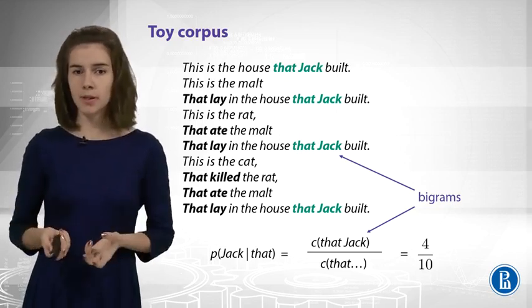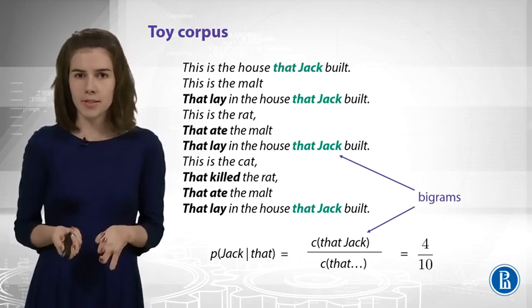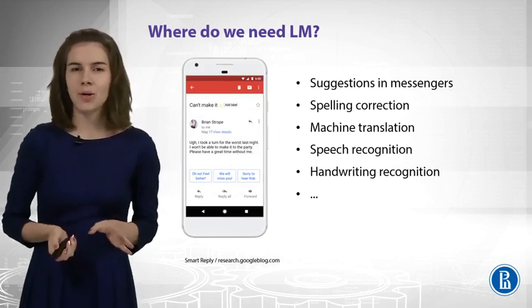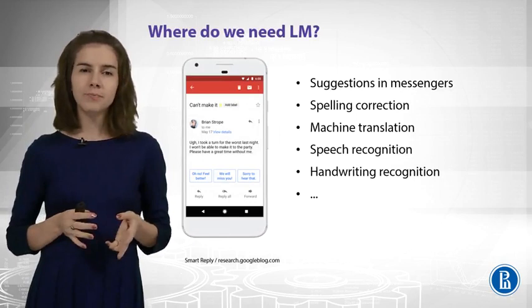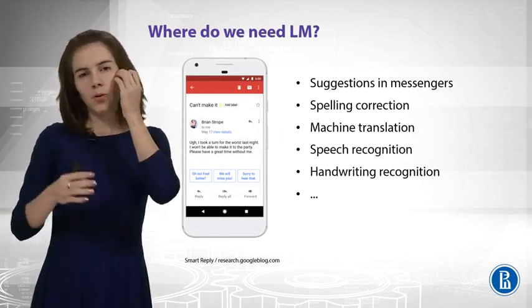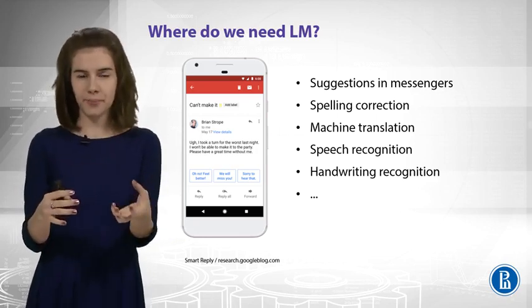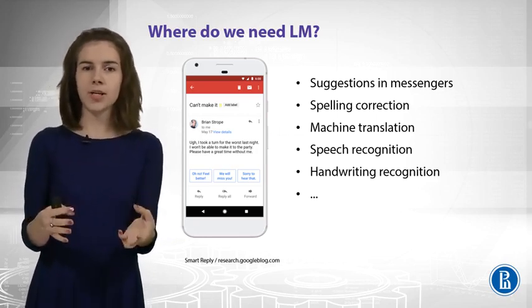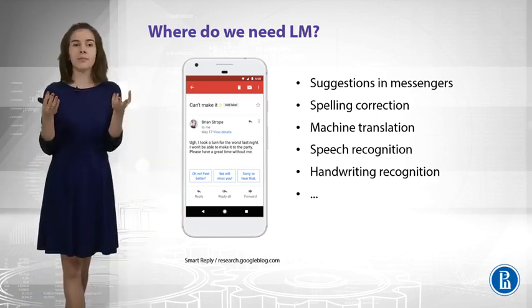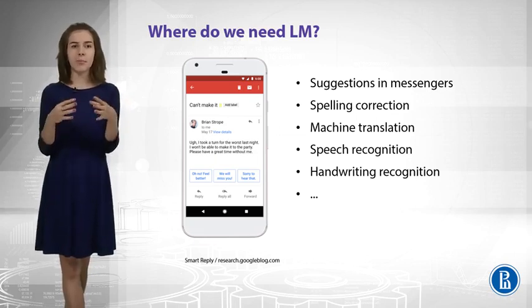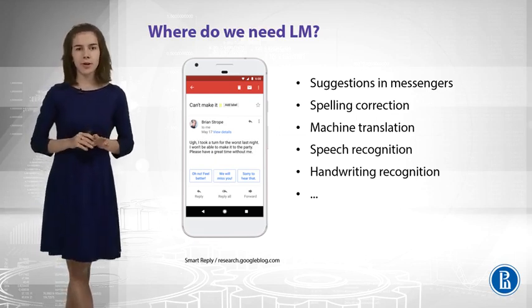So, what's next? We can count some probabilities, we can estimate them from data. Why do we need this? How can we use this? Actually, we need this everywhere. So, to begin with, let's discuss this smart reply technology. This is a technology by Google. You can get some email, and it tries to suggest some automatic reply. For example, it can suggest that you should say thank you. How does this happen? Well, this is some text generation, right? This is some language model. And we will speak about this later in many, many details during week four.